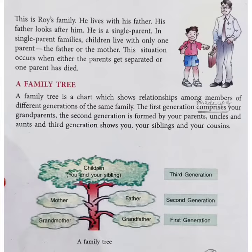The first generation comprises your grandparents. The second generation is made up of your parents, uncles and aunts. And the third generation shows you, your siblings, and your cousins.